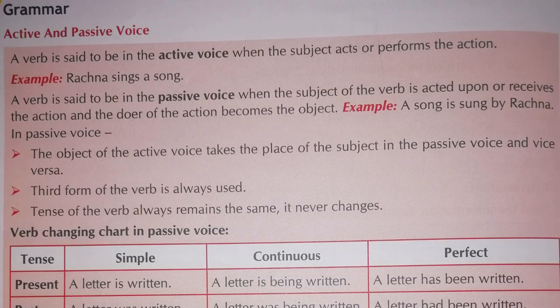When 'Rachna sings a song' — this is present indefinite. In passive voice, we always use V3 (third form of the verb). Remember this point — whenever we apply passive voice, the third form of the verb comes. No other form is used, only V3. So 'sing' becomes 'sung': 'A song is sung by Rachna.'